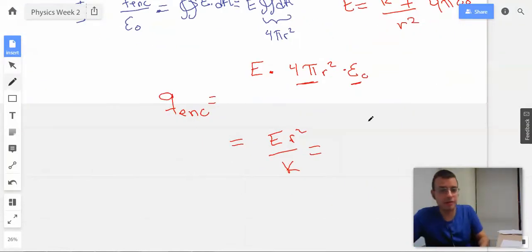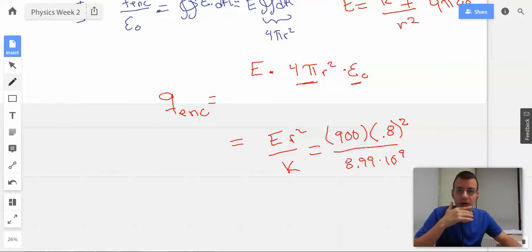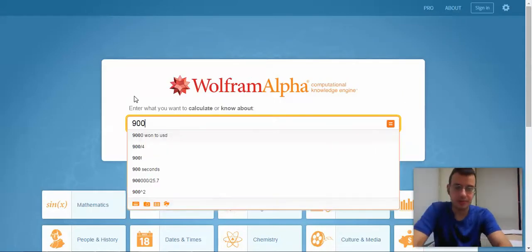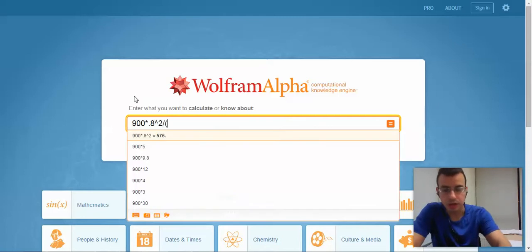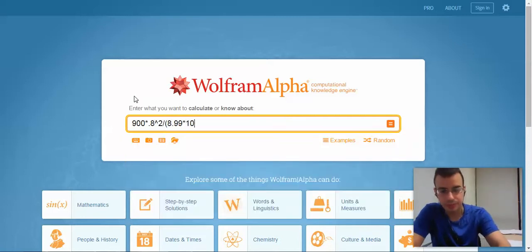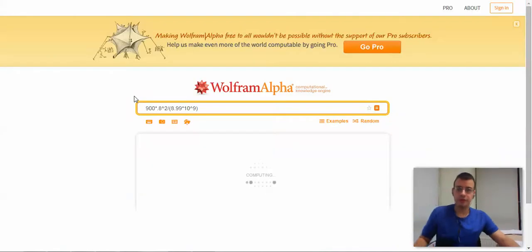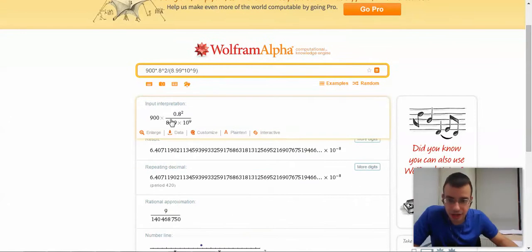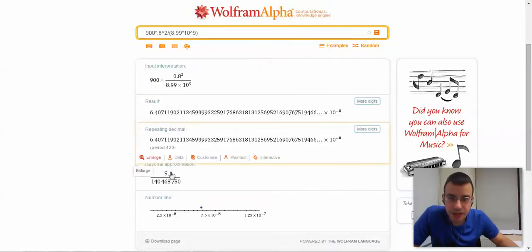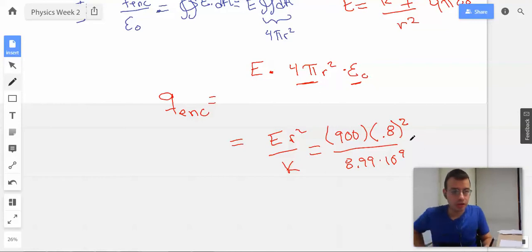So, here we have 900 newtons per coulomb times 0.8 squared over 8.99 times 10 to the 9th. I'm just going to do all that into Wolfram. I could probably simplify it, but I'm not going to. Let's make sure this looks right. 900 times 0.8 squared over 8. Yep. And that gives us 6.407 times 10 to the negative 8th.